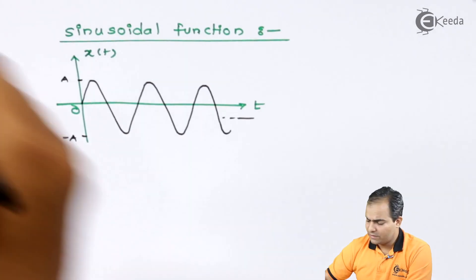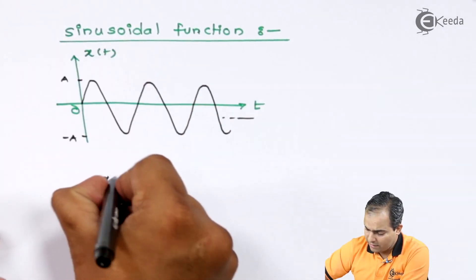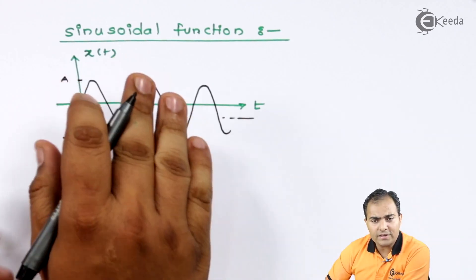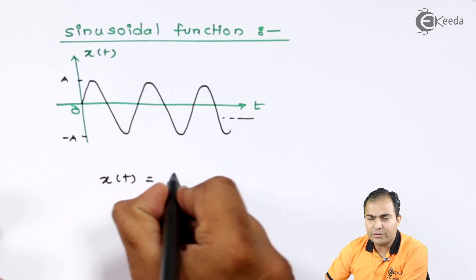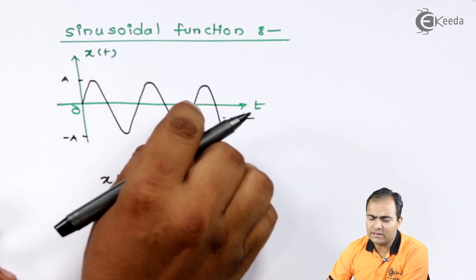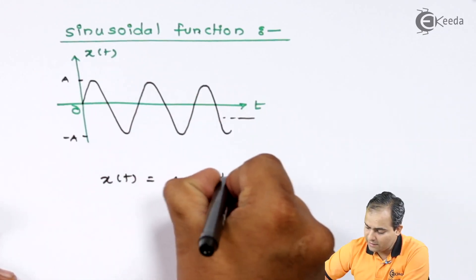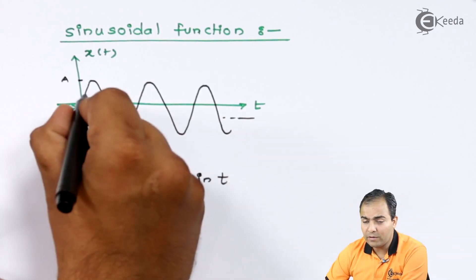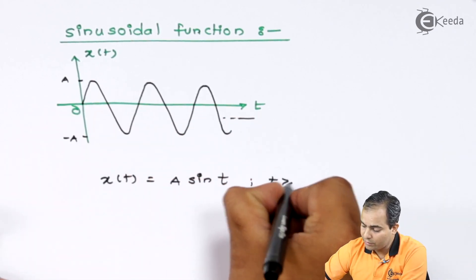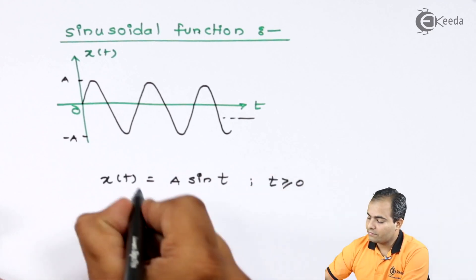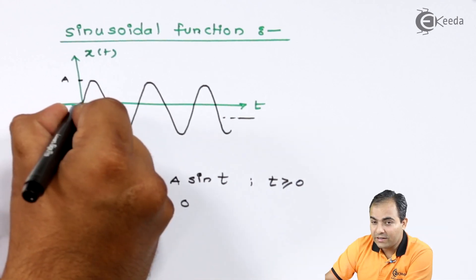Now how to write the function. Let's say this function is represented by x of t. So I will write here x of t equals to - now this graph has amplitude that is A. So the amplitude is A, and the behavior of this graph is simply a sine wave. So I will write sin t. Now this graph is available from 0 onwards, so I am going to write here t is greater than or equal to 0, and it is 0 for t less than 0.